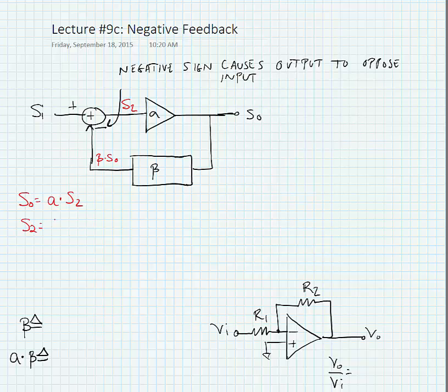and we know that S_2 is equal to S_i minus beta times S_out. If we combine these two, we can get the following expression.